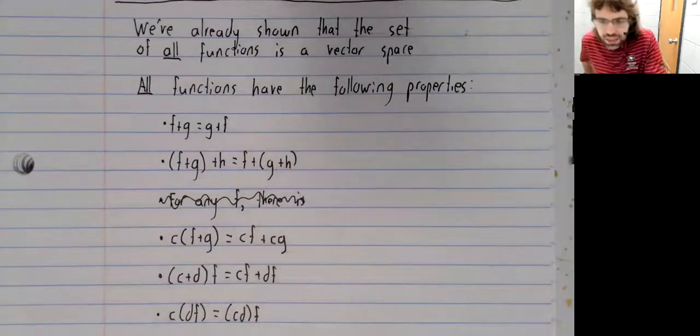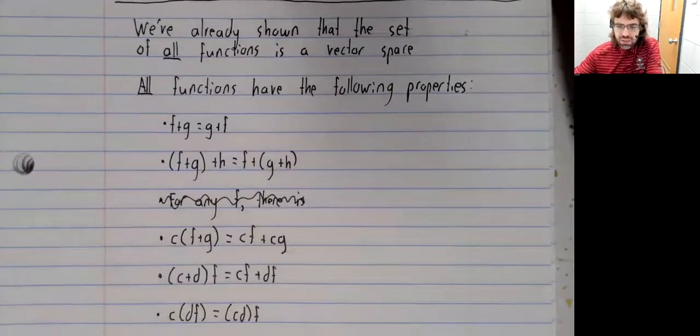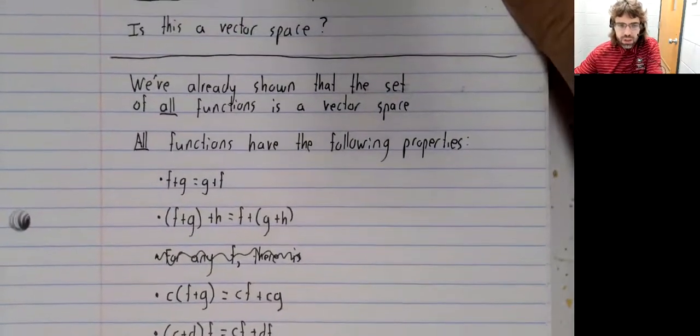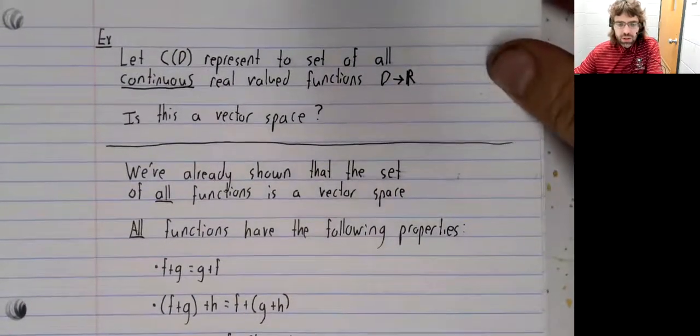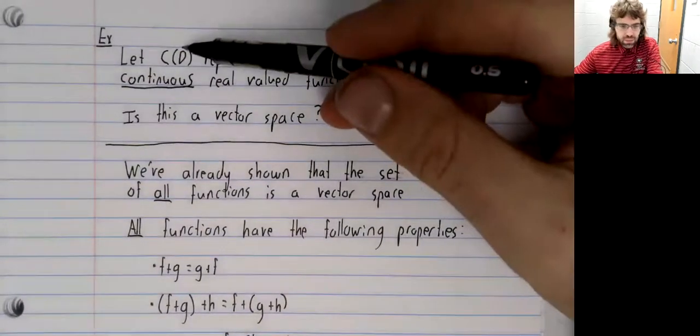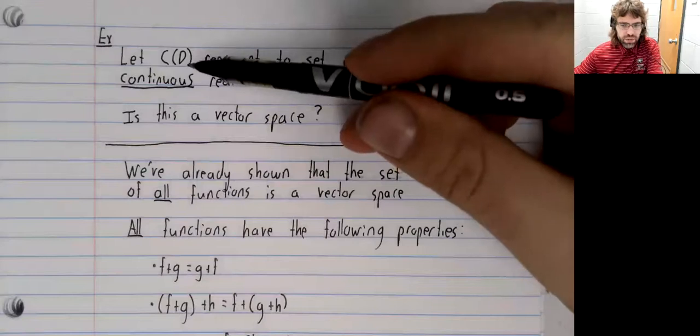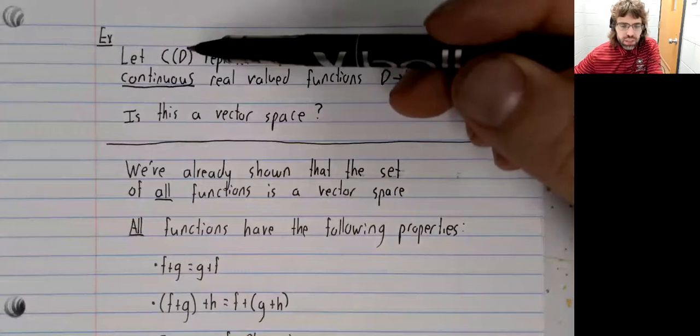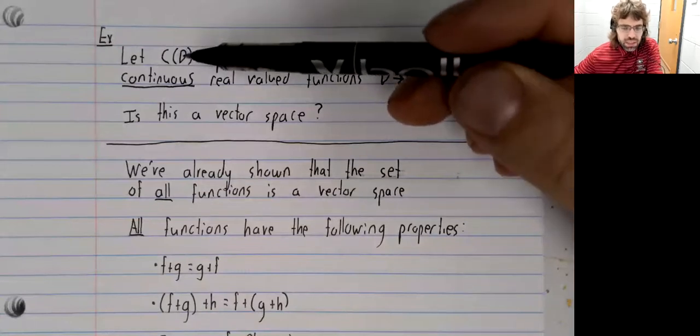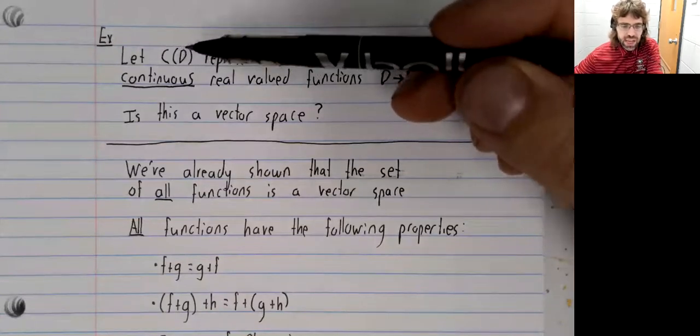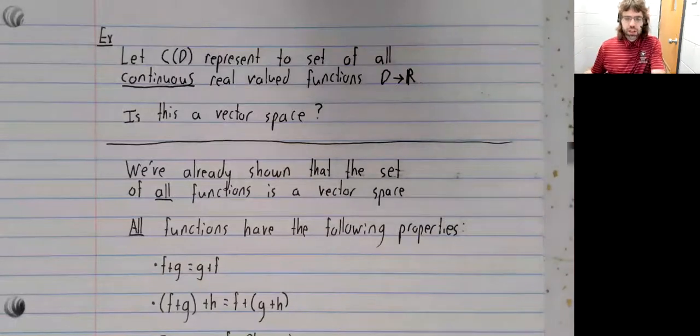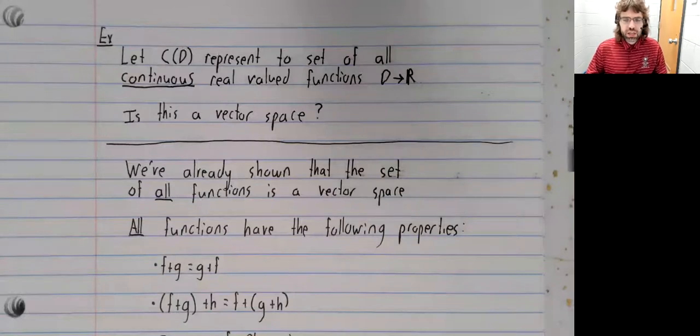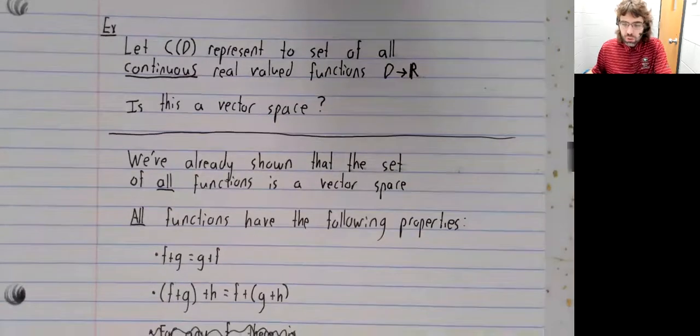Because the set of all functions is a vector space, we know that a zero function exists. But if this set is going to be a vector space, the zero function has to be in this set. In other words, we need the zero function to be continuous, which it is, of course.